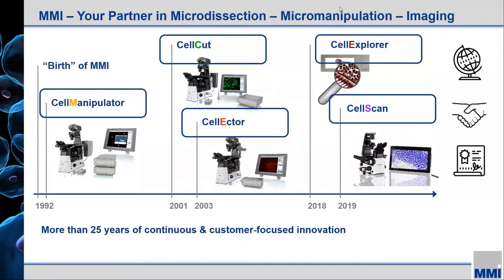This is Professor Stefan Seeger at the University of Zurich. Back around 1992, he was one of the pioneers in an area called laser tweezers or laser trapping. That became our first product line called Cell Manipulator, which is still used throughout the world. Cell Cut was the next product, in the area of laser microdissection, which we will actually go into just a little bit today as it segues from the Cell Scan slide scanning system.